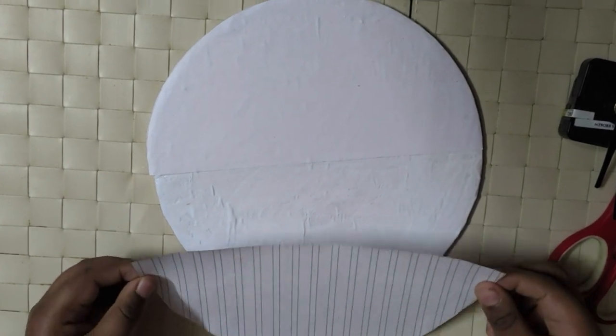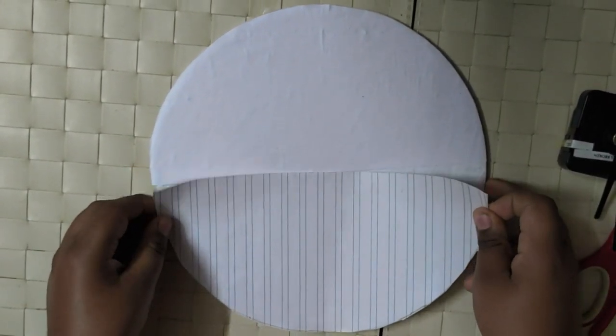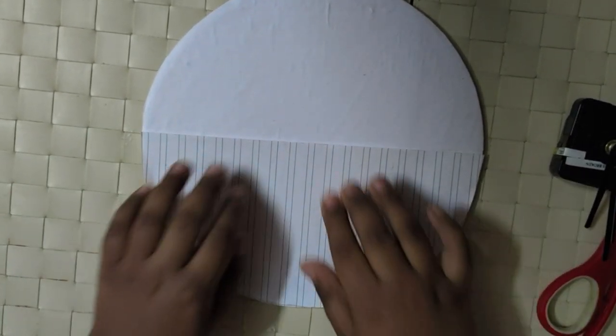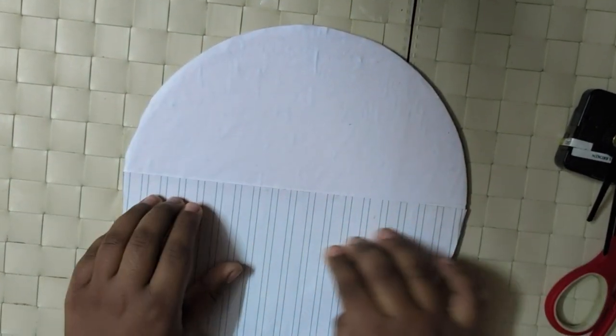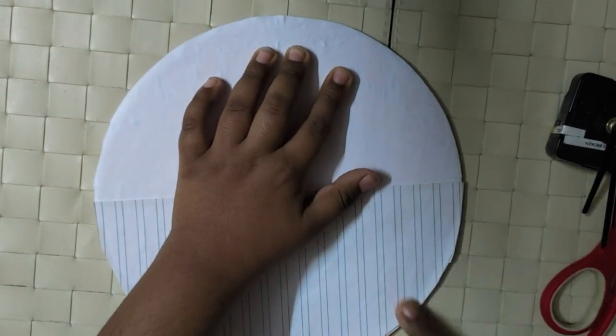So in the first half I have sticked the unruled paper. Now in the second half I am going to stick the ruled paper. Now I have sticked both the papers.